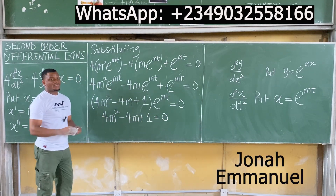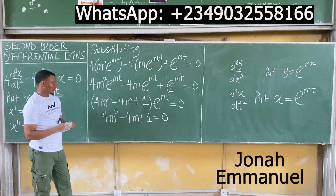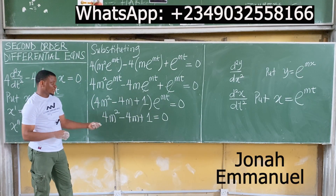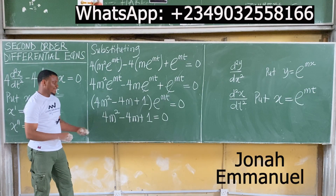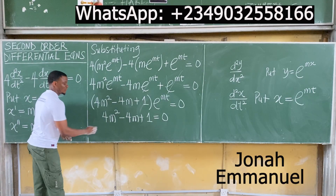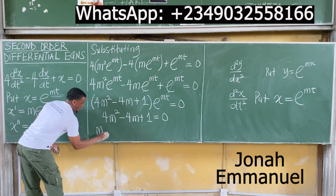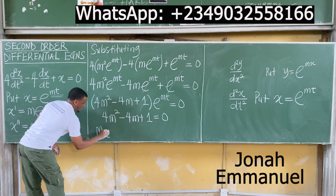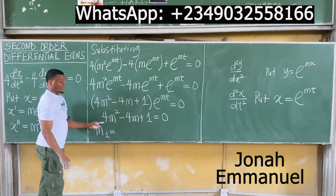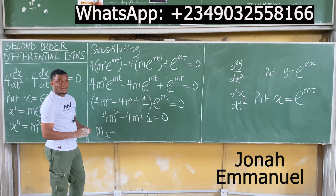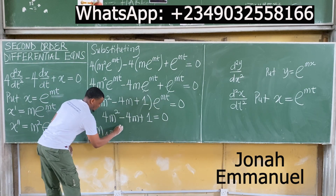So we now have 4m² minus 4m plus 1 equals 0. At this point, solve this quadratic equation. You can use the calculator. Using any quadratic equation method, solve this. m1 equals 1 over 2.